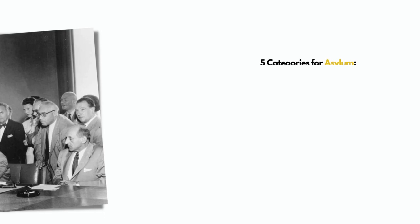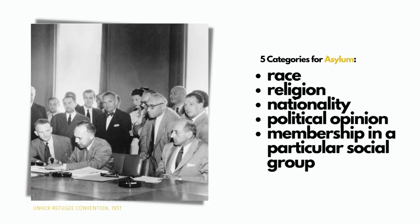The initial 1951 United Nations Refugee Convention established five categories of asylum seekers, including race, religion, nationality, political opinion, and membership in a particular social group, where initially U.S. asylum seekers had to prove on a case-by-case basis that sexual identity belonged to the category of particular social group listed in the convention.